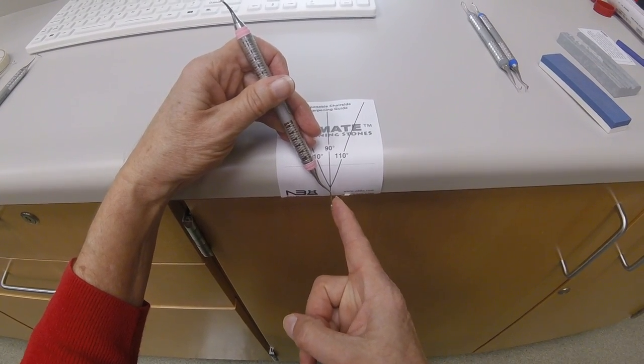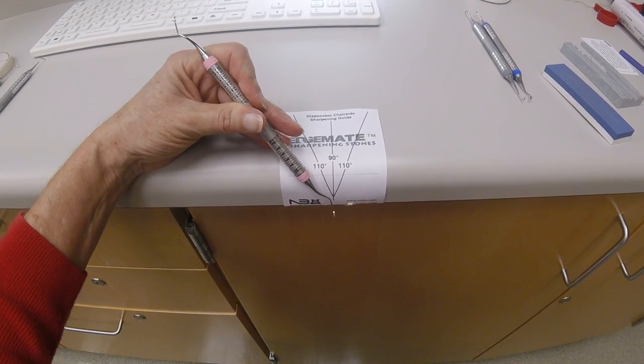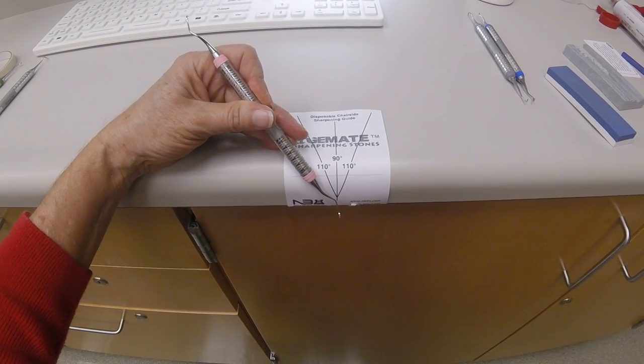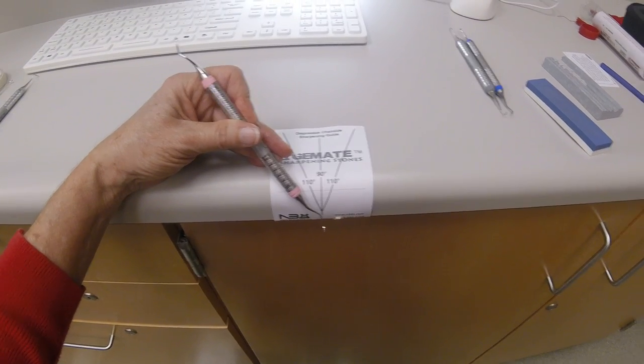Look for the lower cutting edge. Move your instrument handle away from the lower cutting edge to establish a face that is parallel to the floor for sharpening.